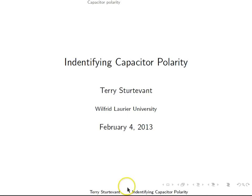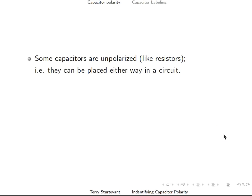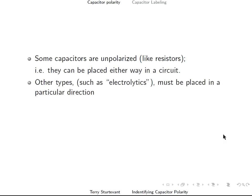This video is about identifying capacitor polarity. Some capacitors are unpolarized, like resistors, so they can be placed either way in a circuit. Other types, such as electrolytic capacitors, have to be placed in a particular direction in a circuit.